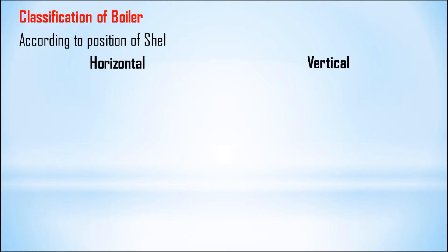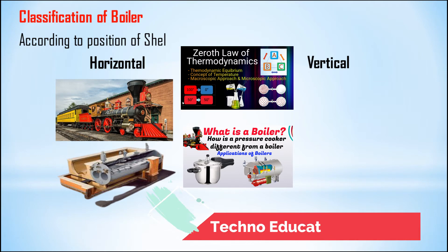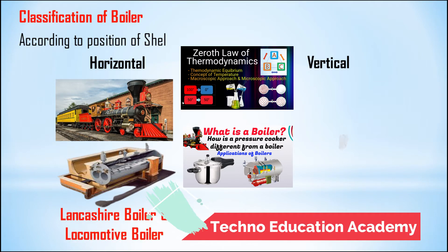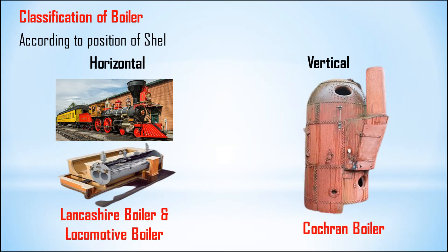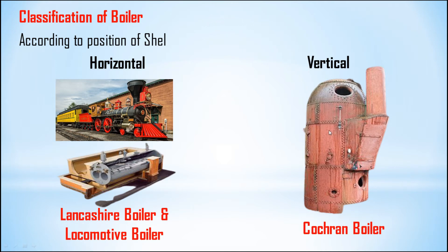The next classification of boilers is according to the position of the shell. We can classify boilers as horizontal boilers and vertical boilers. If the shell remains horizontal, it is called a horizontal boiler; if the shell remains vertical, it is called a vertical boiler. The locomotive boiler and Lancashire boiler are examples of horizontal boilers, and the Cochran boiler is an example of a vertical boiler. In some boilers, if the shell is inclined, it is called an inclined boiler.